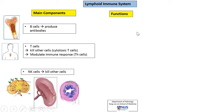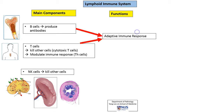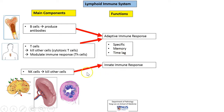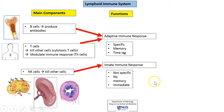Now, what is the function of the lymphoid immune system? The B and T cells are part of the adaptive immune response — a specific immune response to specific pathogens or antigens. There is memory, but there is usually a time lag, so it is not an immediate response. In contrast, NK cells are part of the innate immune response, which is not specific. It is the body's first line of defense, so it is pretty immediate and there is no capacity for memory.